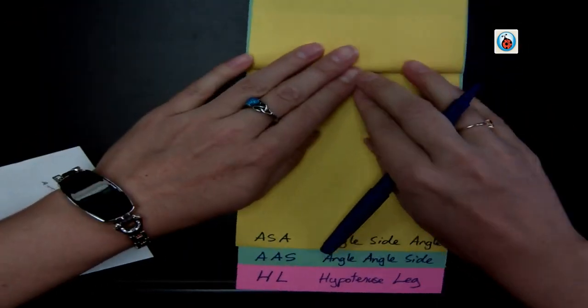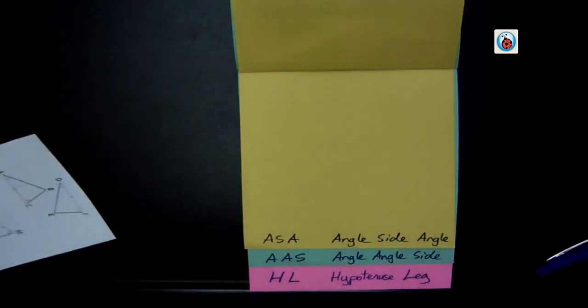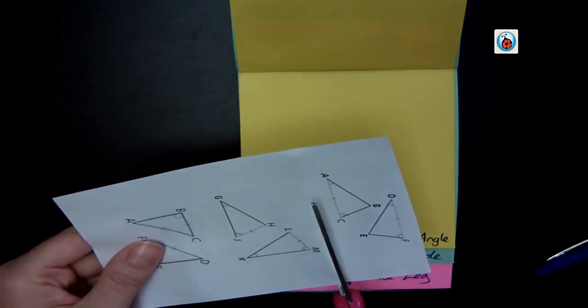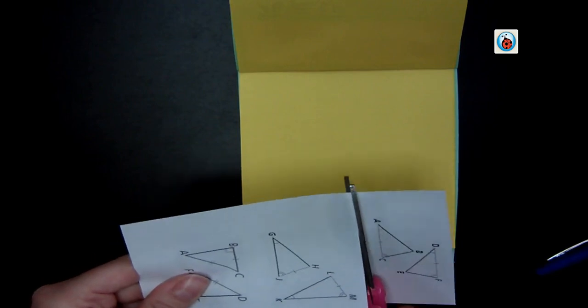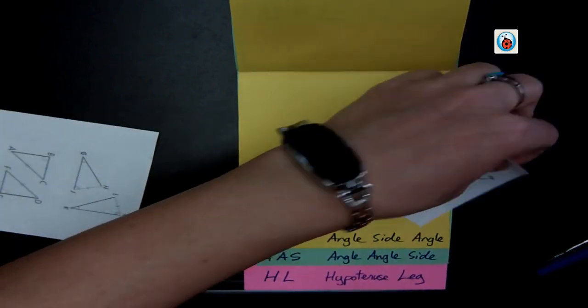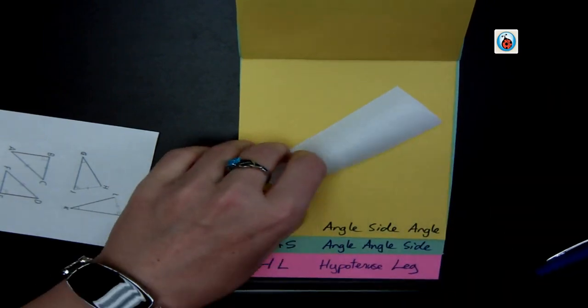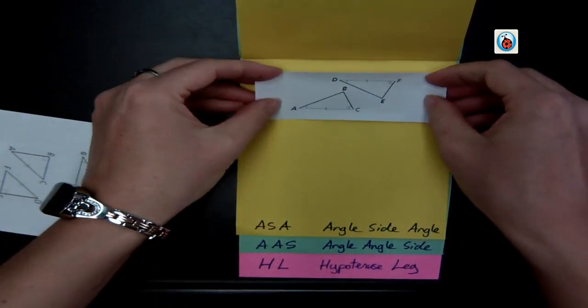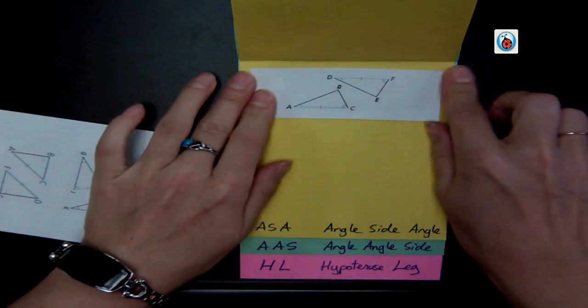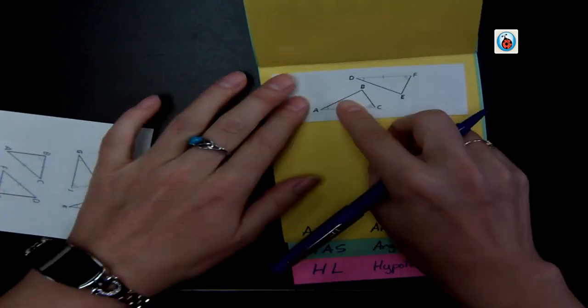Now I go on to angle, side, angle. I glue on my next triangle and label what I have.